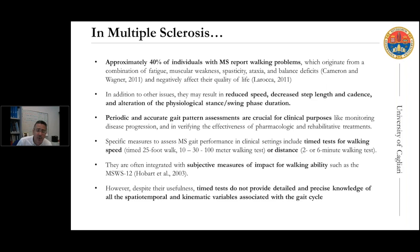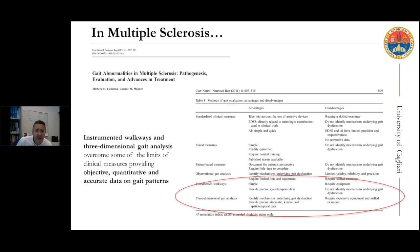In clinical settings, neurologists usually perform timed tests like the 25-foot, 10, 30, or 100-meter walking test, or distance tests like the 2 or 6-minute walk, often integrated with subjective measures of impact such as the MSWS-12. However, timed tests are not able to provide detailed and precise knowledge of the spatial-temporal and kinematic variables associated with the gait cycle.